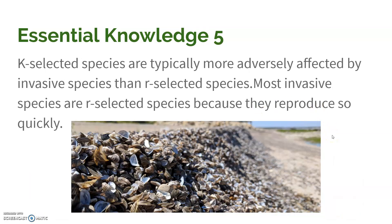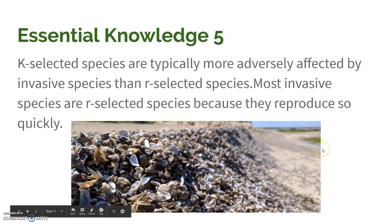K-selective species are also more typically adversely affected by invasive species than R-selective species. R-selective species are much more likely to be the invasive species, because they can reproduce really quickly, don't require a lot of resources, and can adapt to pretty much anything. Because they reproduce quickly and have a lot of offspring, they can just completely take over — like zebra mussels, which are a huge problem and will come up a lot this year.